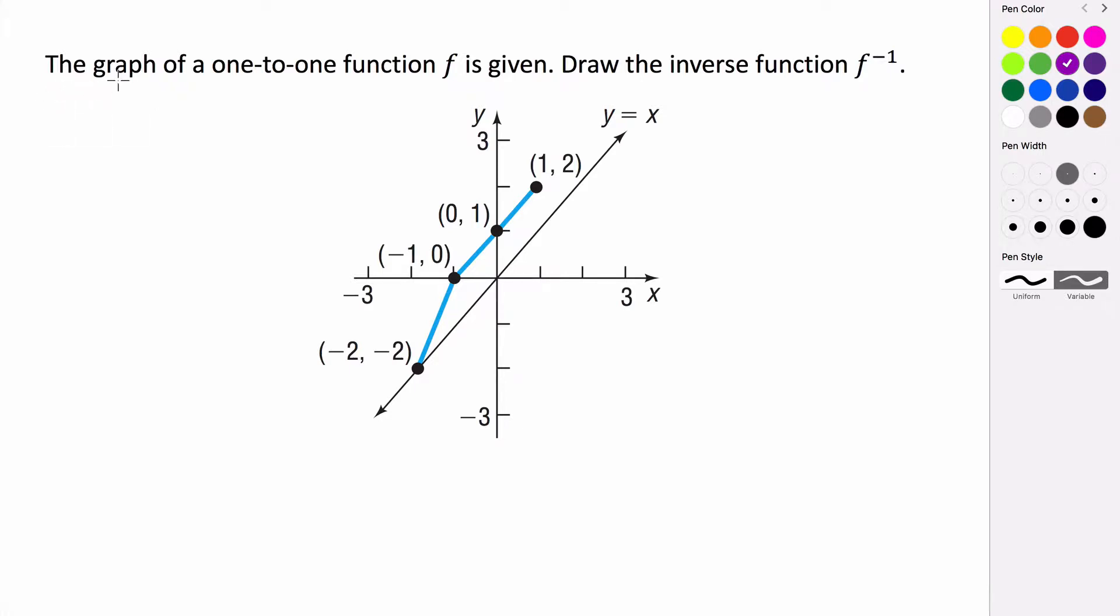In this example, we need to graph the inverse. We want to draw the inverse of this function. So this is our function f. We're told that our function is one-to-one, and we want to draw its inverse.